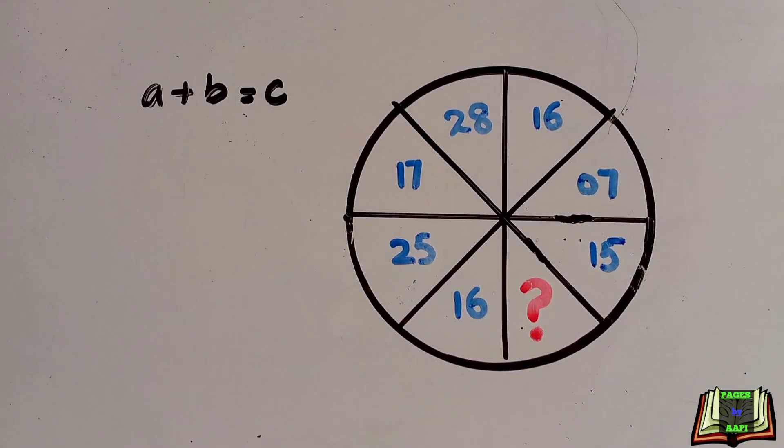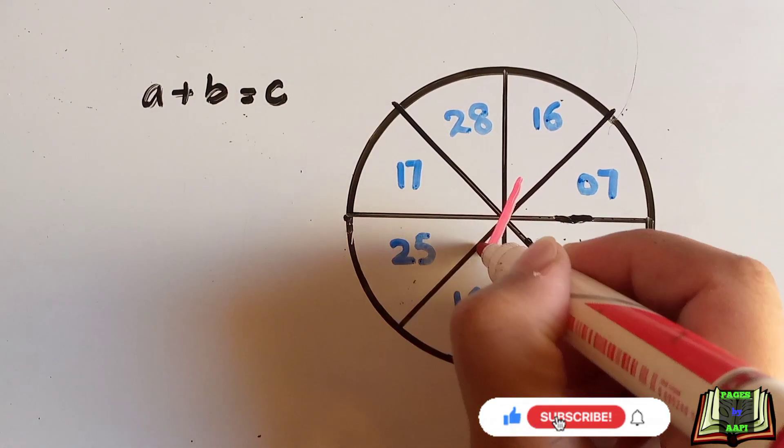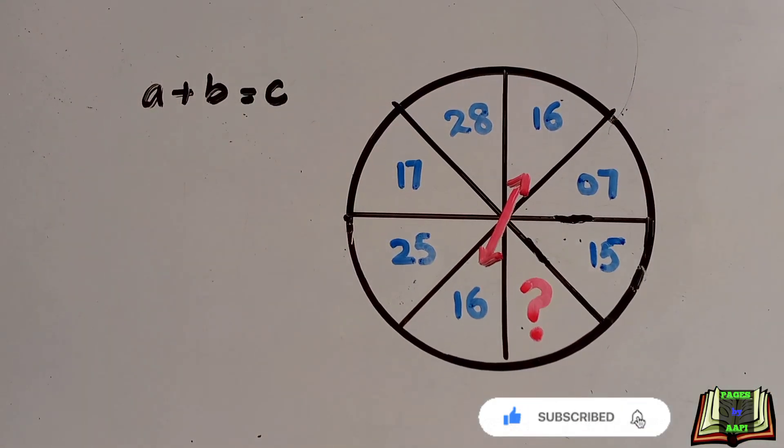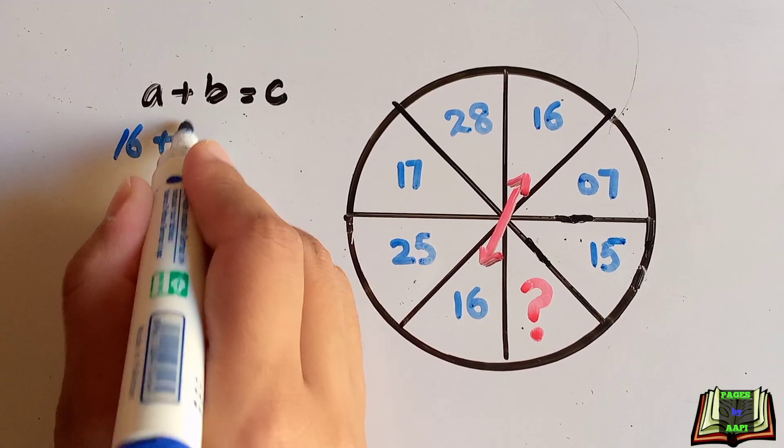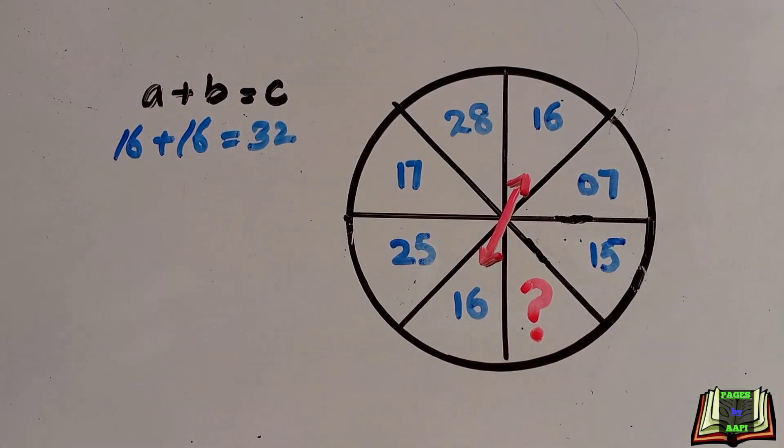Here a is the first number, b is the second, and c is the combination of both numbers. Like if we add 16 and 16, so here a is 16 and b is also 16. It means 16 plus 16 is 32.